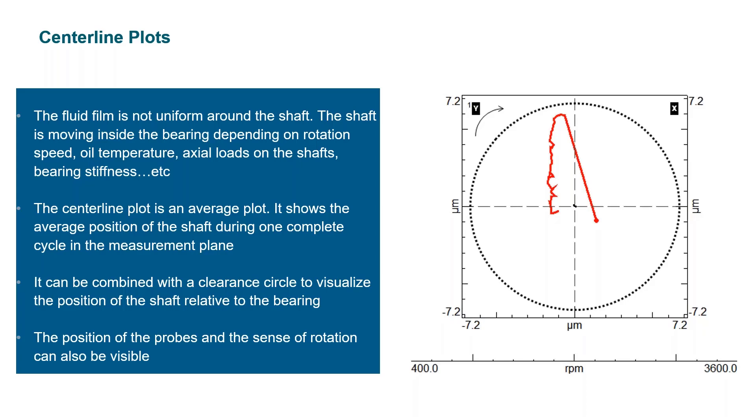On this centerline plot, we find again the same type of information as what we have on the orbit, meaning that we have this X and Y annotation, which shows the angular position of our probes. So in that case, they are positioned at 45 and 135 degrees.